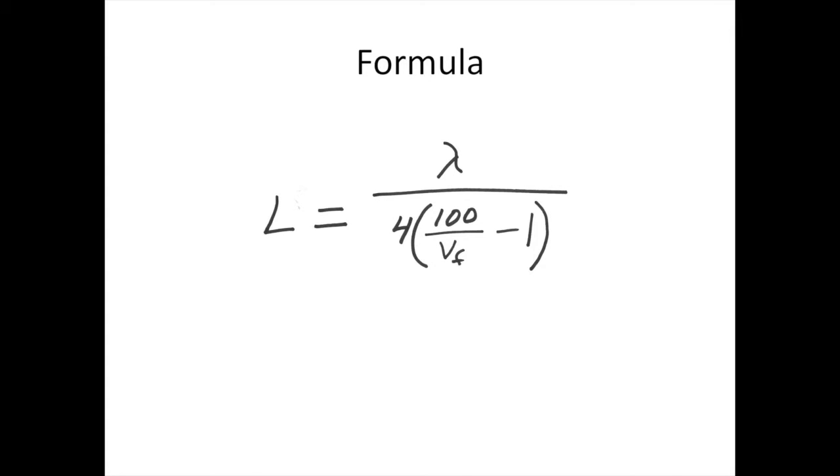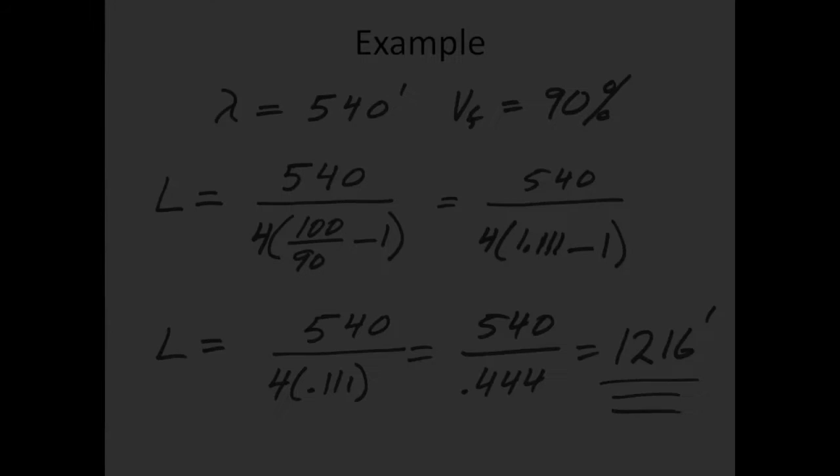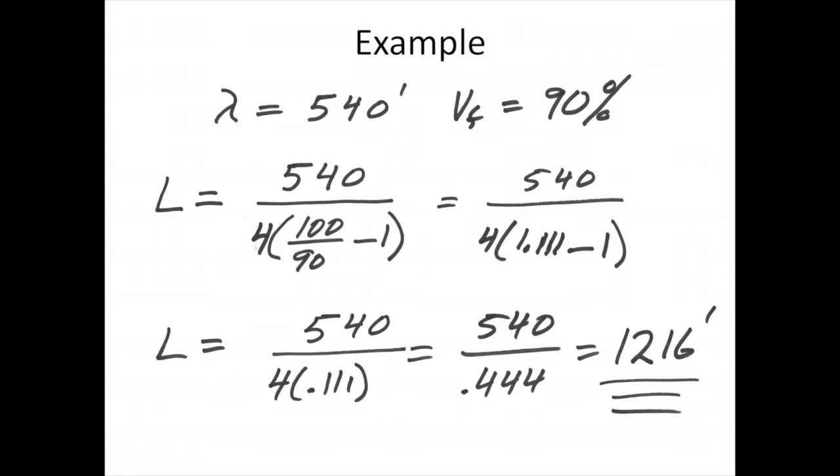Now this is a formula to calculate the length in terms of wavelength and velocity factor, and this is at a zero degree elevation angle. This example uses a wavelength of 540 feet for 160 meters, a velocity factor of 90 percent which is pretty average, and we come in with a length of 1216 feet. Many people have used the term a 1200 foot beverage. 1200 is just a typical length for a 160 meter in the air beverage.